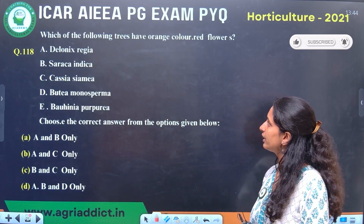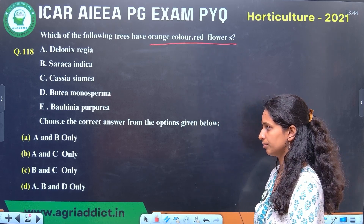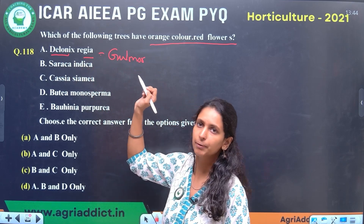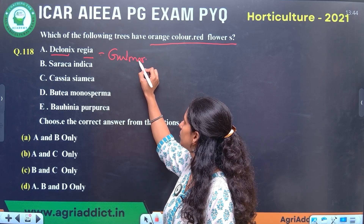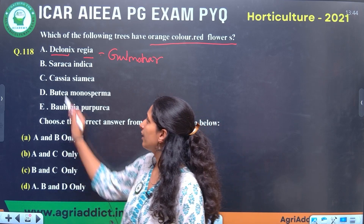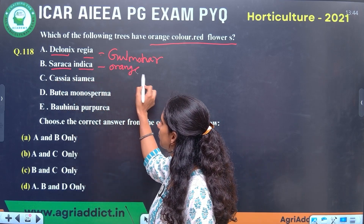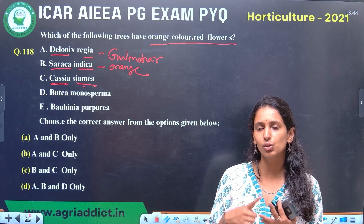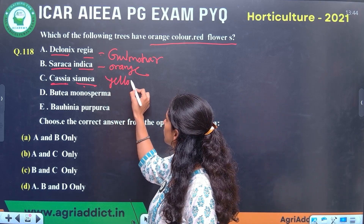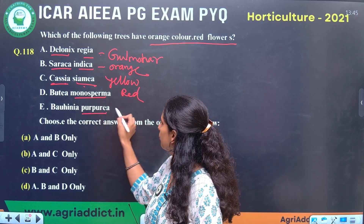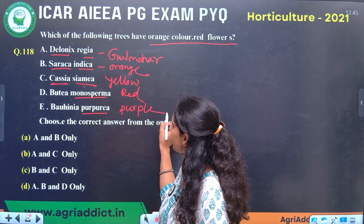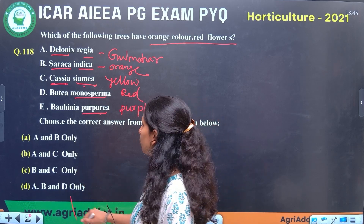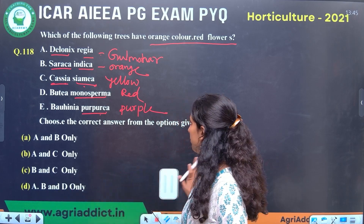Next question: which of the following trees have orange or red flowers? Delonix regia is called Gulmohar tree, which has red colour flowers and blooms in summer. Saraca indica, the Ashoka tree, has orange colour flowers. Cassia siamea has yellow colour, and Butea monosperma has red colour. Bauhinia purpurea has purple colour. The right answers are Delonix regia and Saraca indica. If you studied the previous Cassia question, you could answer this easily.